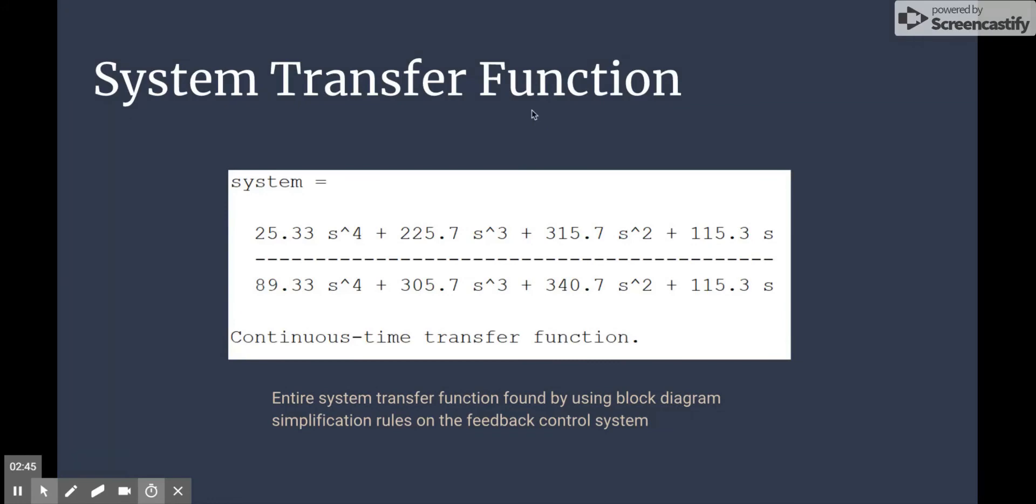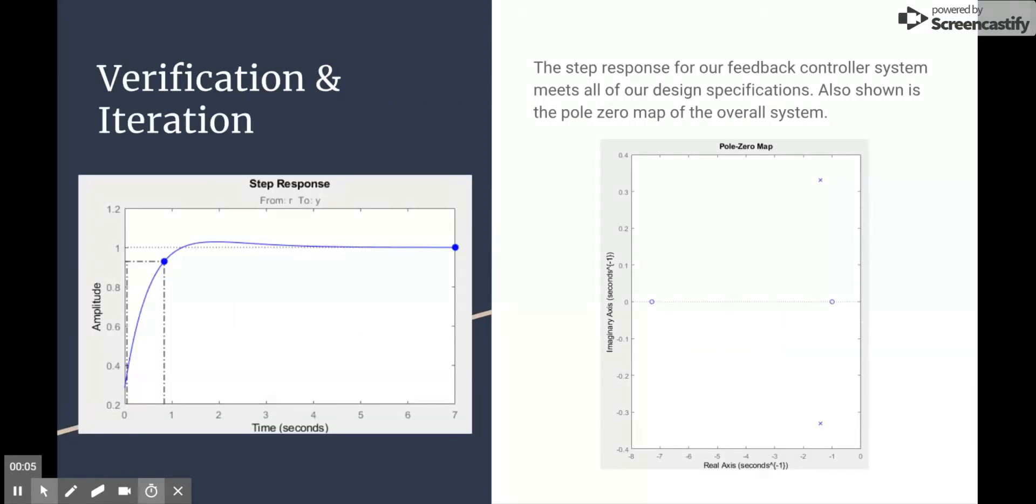Now we have the overall system transfer function, which implements the entire block diagram from a couple slides ago with both the controller, plant, and feedback loop. It's important to understand why we used a feedback control solution for this project. The main reason is because we had a system where the output depends on the previous output. If you're going to regulate the frequency of the generators generating power, you need to know what the current drawn load is and the current operating frequency of the generators. Because you need to monitor that information and relay it back into the system, that is why a feedback control solution is applicable.